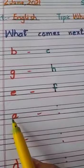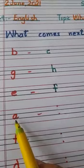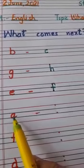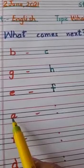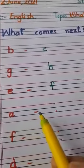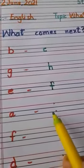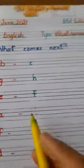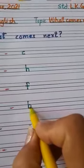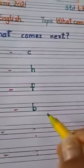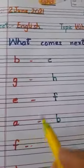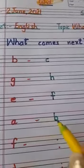Next is A. This is small letter A. What comes after A? We will speak: A, B. We will write here — B. A, B.